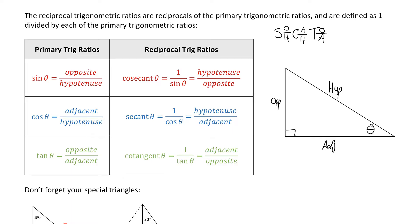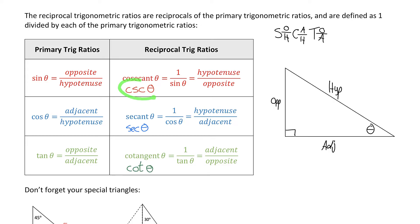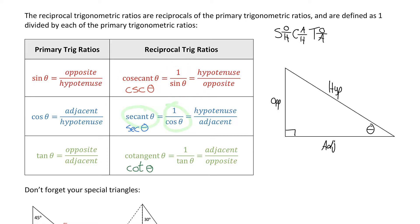The reciprocal trig ratios are called cosecant, secant, and cotangent. They each have short forms: the short form of cosecant is CSC, the short form of secant is SEC, and the short form of cotangent is COT. Each of these trig functions — cosecant, secant, and cotangent — are just equal to the reciprocal, so 1 over its corresponding primary trig ratio. Cosecant is the reciprocal of sine, secant is the reciprocal of cosine, and cotangent is the reciprocal of tangent.